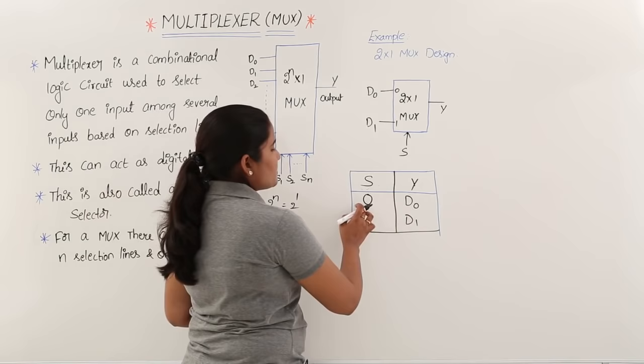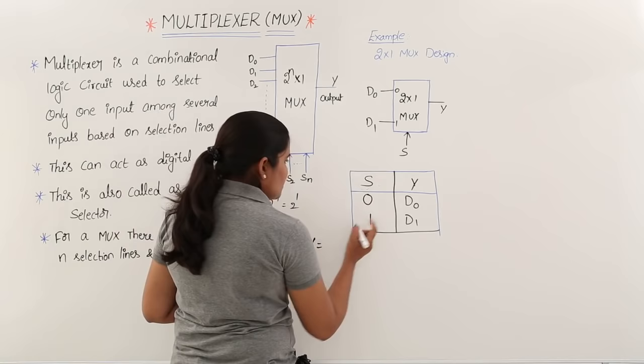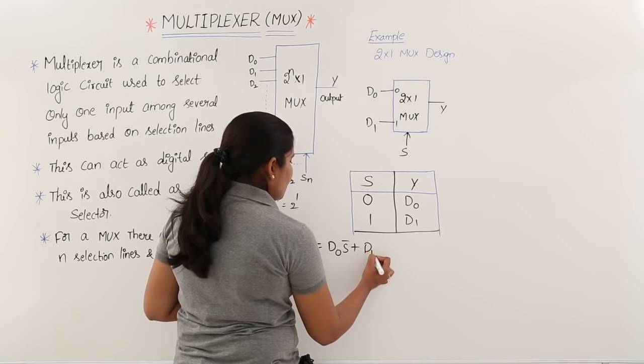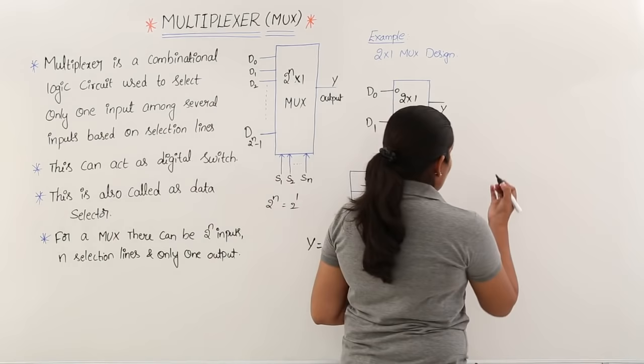The Boolean expression for the 2:1 MUX output is: Y = D0·S̄ + D1·S. This represents the MUX circuit equation, and I am now taking the logic circuit with selection lines.